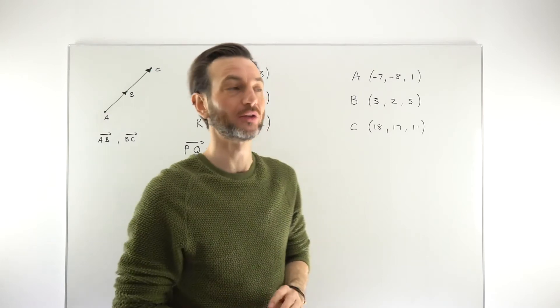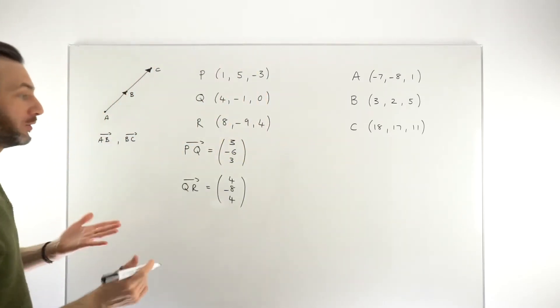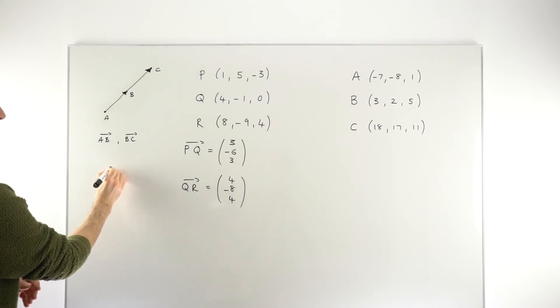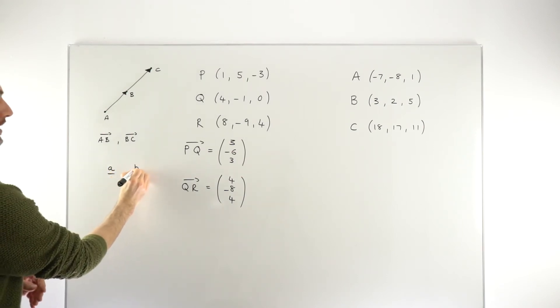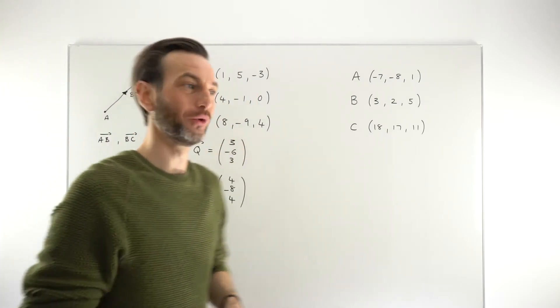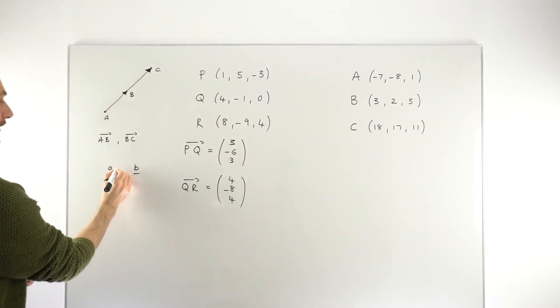Now, the challenge is to show that those vectors are parallel. How do you show a vector is parallel to another one? Well, you basically, let me just say I've got a vector A and a vector B, and we want to show they're parallel. You just basically show that one is a multiple of the other.